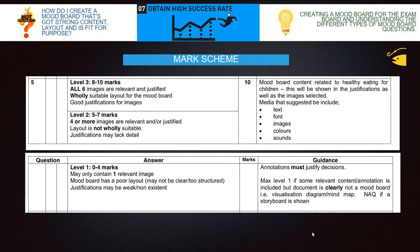Annotations must justify the decisions — your labels must justify the decisions. Maximum level one if some relevant content and annotation is included but the document is clearly not a mood board. So for example, if you've drawn a visualization diagram or a mind map, the highest you can get is level one. But you guys won't make that mistake — you should all clearly know what a mood board is, what a mind map is, and what a visualization diagram is.